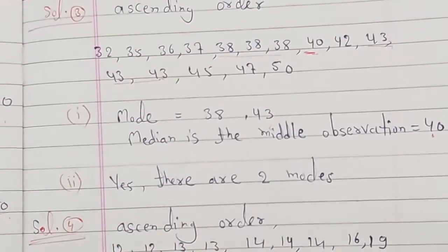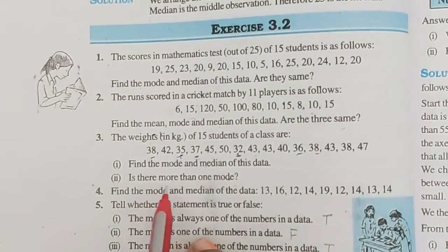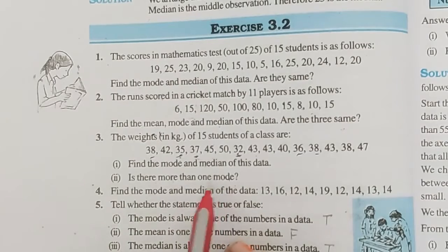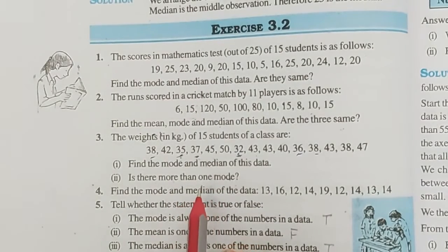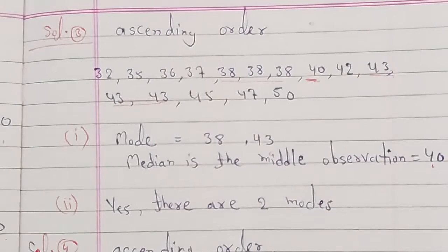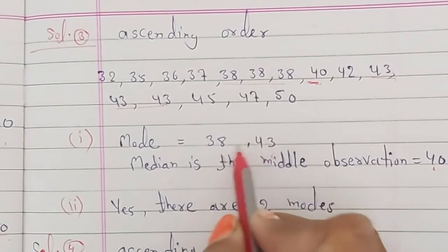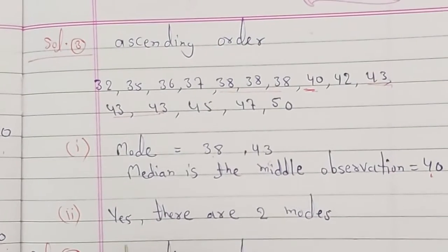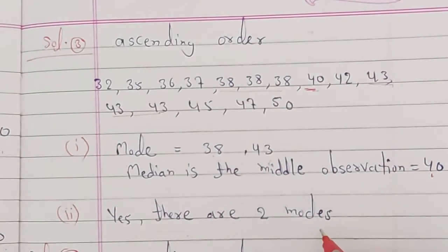Second point: Is there more than one mode? Yes — since both 38 and 43 each appear 3 times, there are 2 modes. So the answer is: yes, there are 2 modes.